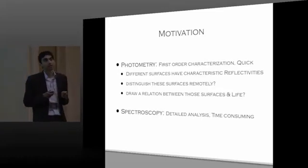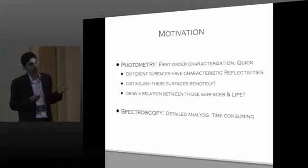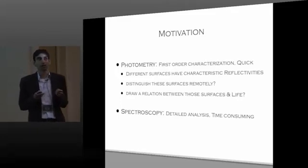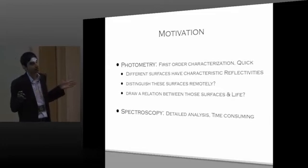Photometry is a good tool to give you initial first order approximation. We know from the Earth that different surfaces have got characteristic reflectivities or albedos. What I want to see is if I can remotely characterize these different surfaces and if I can build a link to biology.